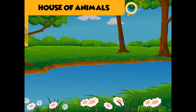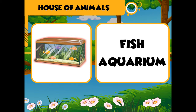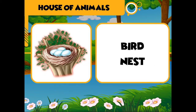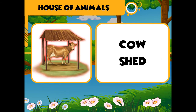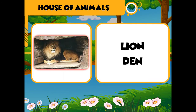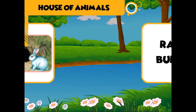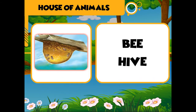House of animals: horse — stable, fish — aquarium, bird — nest, dog — kennel, cow — shed, lion — den, snake — hole, rabbit — burrow, bee — hive.